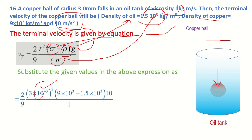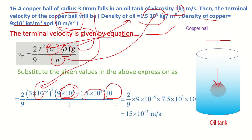Converting to meters: sigma equals 9 × 10³, rho equals 1.5 × 10³, and g is substituted. Solving this gives 15 × 10⁻² meters per second, which is your answer.